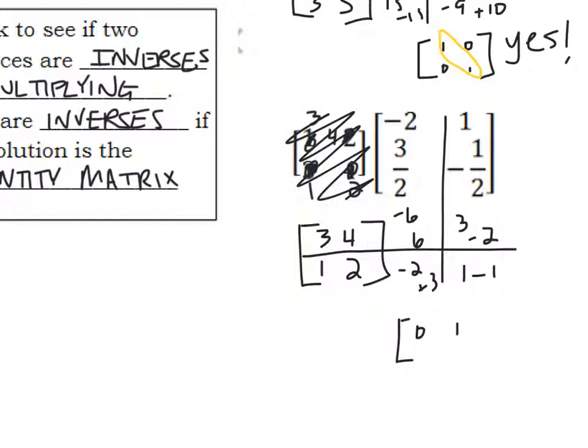So when we simplify this, we get 0, 1, 1, 0. This is not an identity matrix. So once again, identity matrix is ones on the diagonal from top to bottom, top left to bottom right. So those two are not inverses of each other.